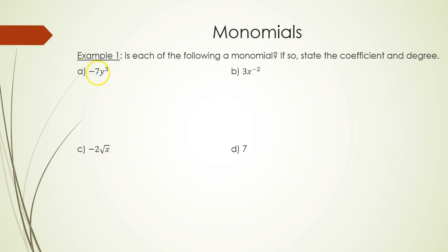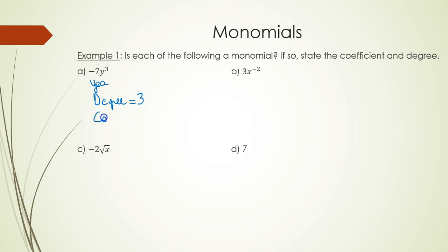In part a, the power on y is three, so yes, it is a monomial. The degree is three — that's the power on the variable — and the coefficient is negative seven, that's the number out front.